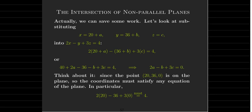In other words, 2 times 20 minus 36 plus 3 times 0 must equal 4, because that point is a point on the plane. So it must satisfy the equation of the plane.